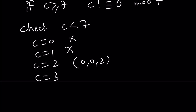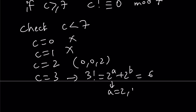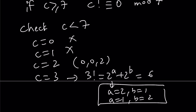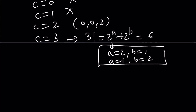Let's test c=3. If c=3, then 3 factorial = 6 = 2^a + 2^b. Notice that 4 + 2 = 6, so we get a=2, b=1 or a=1, b=2. Since a and b are interchangeable, that gives us the solutions (1, 2, 3) and (2, 1, 3).